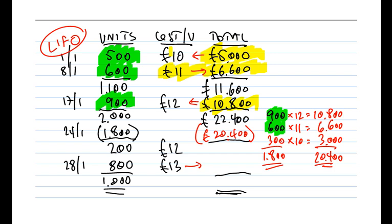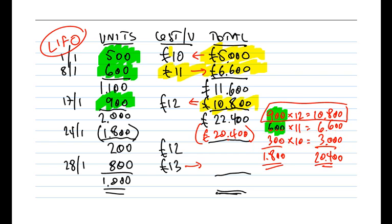Under FIFO, the issue was valued at £20,000. Under LIFO, it's valued at £20,400 — a slightly higher cost. The reason is that under LIFO we're taking more units at the most recent — and highest — price of £12, and fewer units at the oldest price of £10. So you would typically expect LIFO to give a slightly higher value for the issue.